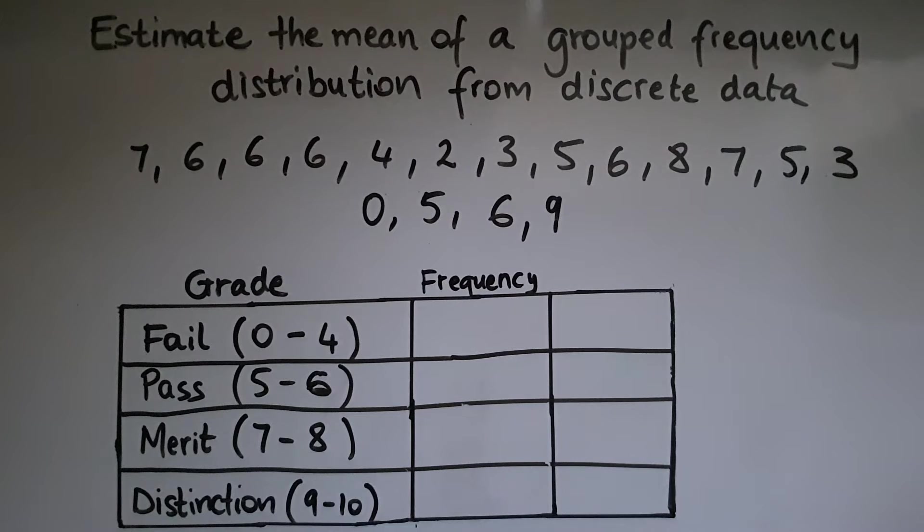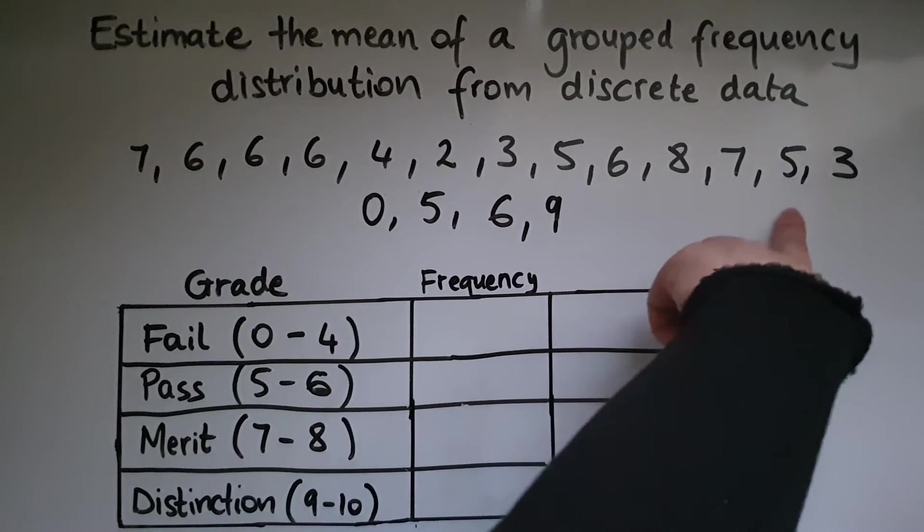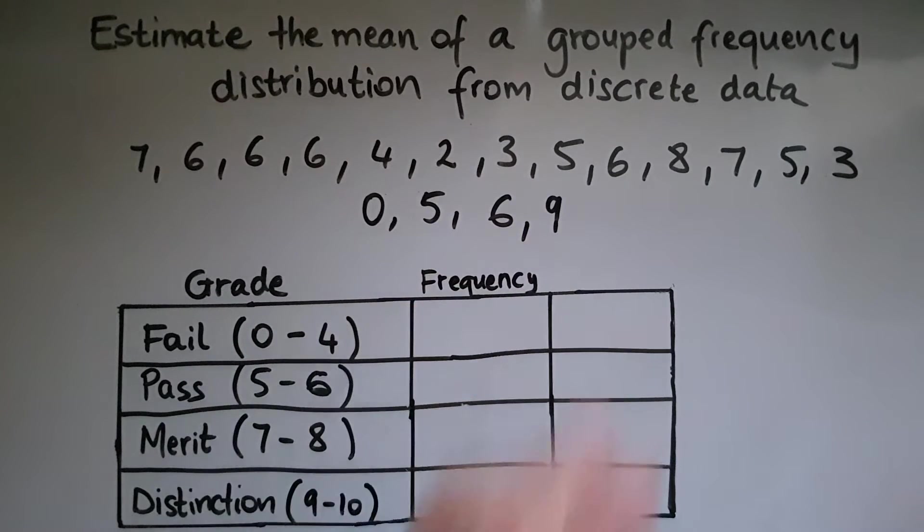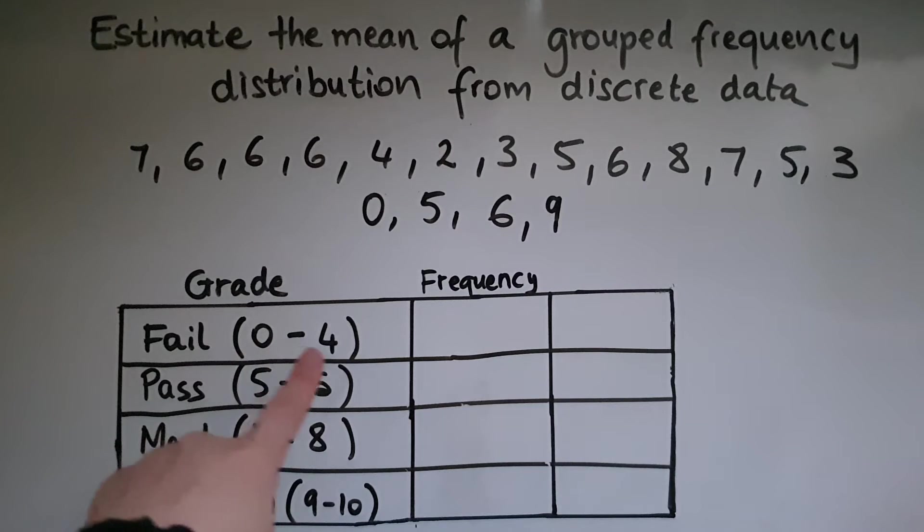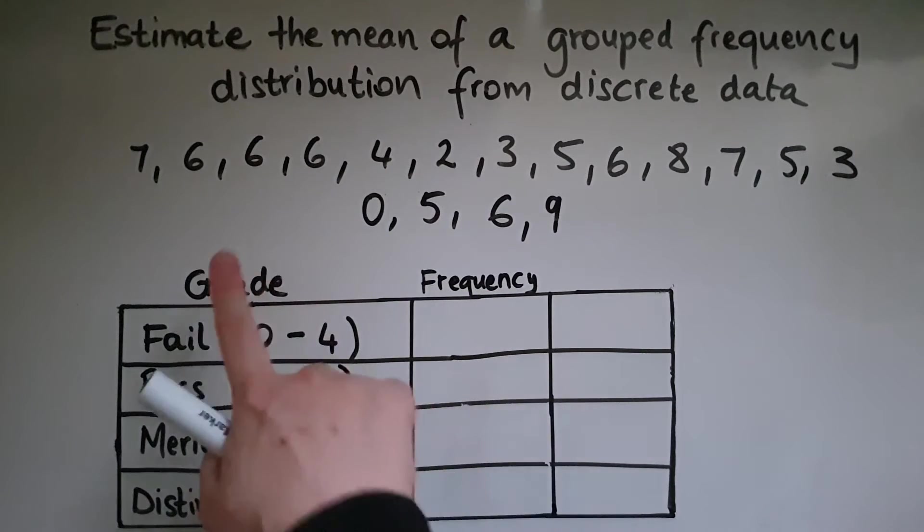The example that I have here is the marks that have been received by a group of students. So we've got 7, 6, 6, 6, 4, 2, 3, 5, 6, 8, 7, 5, 3, 0, 5, 6, 9. So this table tells you that you failed the exam if you scored between 0 and 4. You pass if you score between 5 and 6. You get merit if you score 7 or 8 and distinction if you score 9 or 10 marks. Now we'll see what this means. Frequency is how many of these marks you'd see in the class.